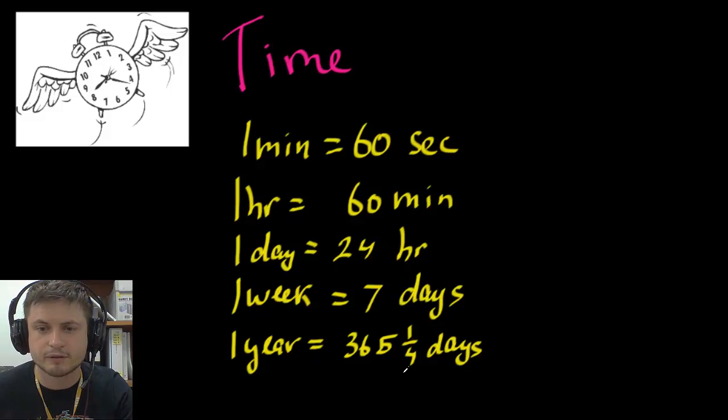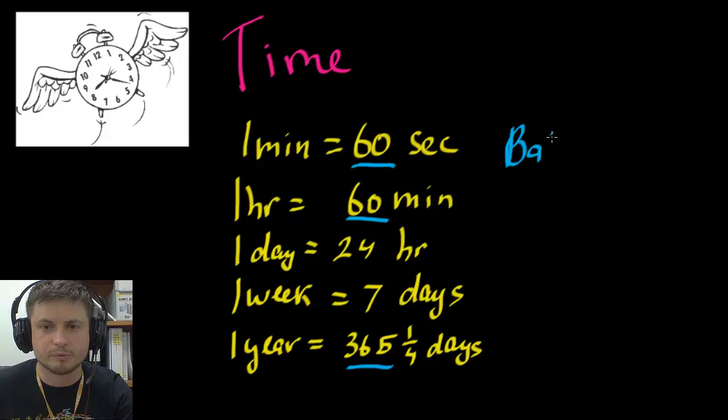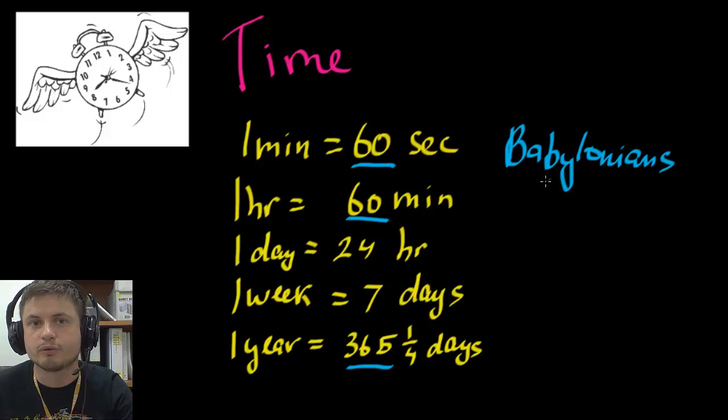And this is actually why we have a leap year where every four years we actually get an extra day. But what's interesting to see here is that there's 60 here and there's 60 here and there's also 360 here. Now this is important to know because this is actually from ancient Babylonians, which was an ancient culture about 4,000 years ago. And these Babylonian people actually measured everything in 60s, not in 10s like we do, but in 60s. And this is where we're getting this from.